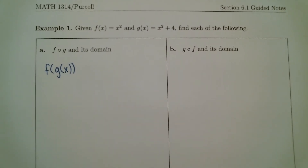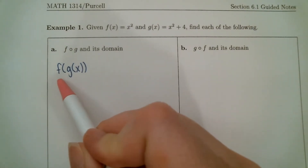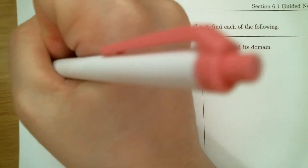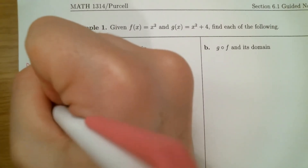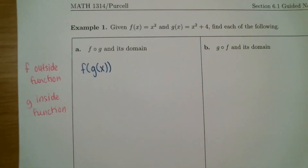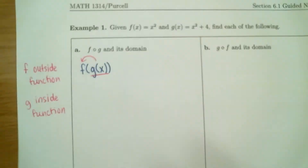Remember what composition is — we are plugging a function into a function. The question is: are we plugging f into g, or g into f? We need to realize who's who here. F is on the outside, and g is on the inside. So f is considered to be the outside function, and g is the inside function, because it's inside the parentheses.